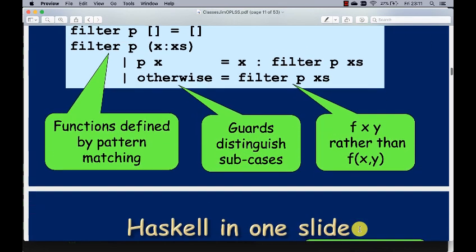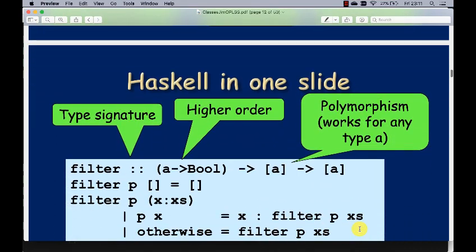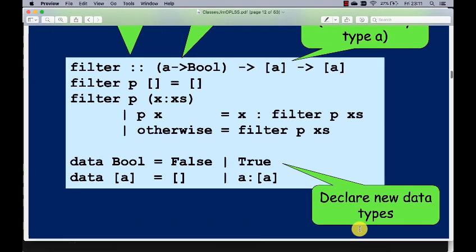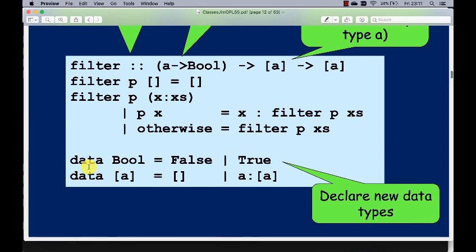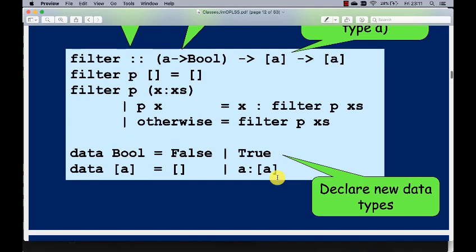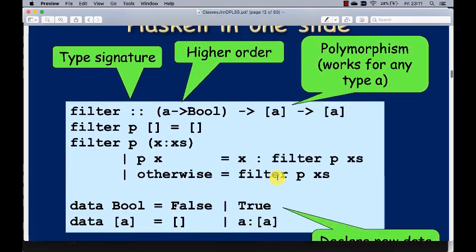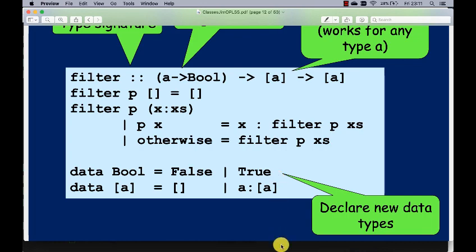So according to Simon Payton-Jones, this is Haskell in one slide here. Type signatures. Higher order functions, which allows us to have function values. Polymorphism, working for arbitrary types. And here we go. We can declare data types as well. And these ones here, of course, are declared in the prelude. The standard library of Haskell, bool is true or false. And alpha list is either an empty list or an alpha value cons'd onto a list of alpha values. So apparently that's Haskell in one slide. That's all you need to know. So says Simon Payton-Jones.